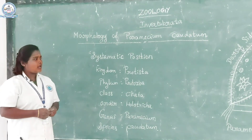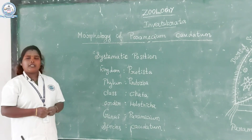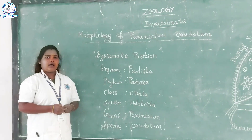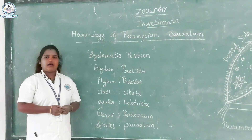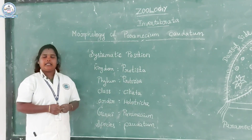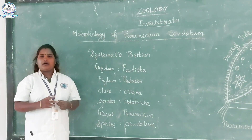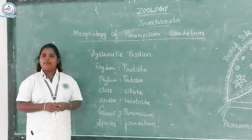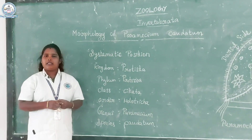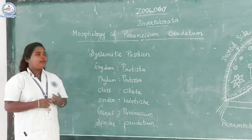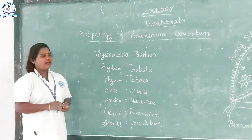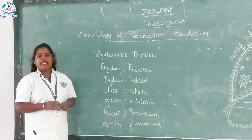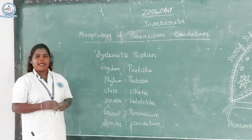First of all, protozoans are simple, primitive, microscopic and minute organisms, and also acellular or unicellular organisms. Acellular or unicellular means the body contains a single cell. There are two types of organisms: unicellular and multicellular. The best example for unicellular organisms are protozoans. They are microscopic and minute — we can't see them with the naked eye; we can observe them only under the microscope.